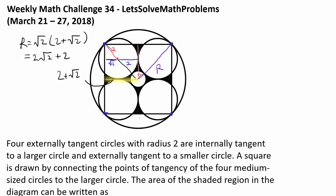Now for lowercase r: it's found by taking capital R and subtracting 4, the diameter of the medium-sized circle. So lowercase r equals (2√2 plus 2) minus 4, which gives us 2√2 minus 2 as the radius of the small circle.